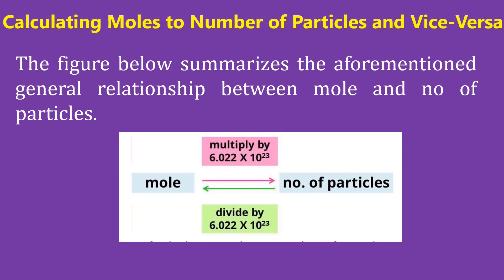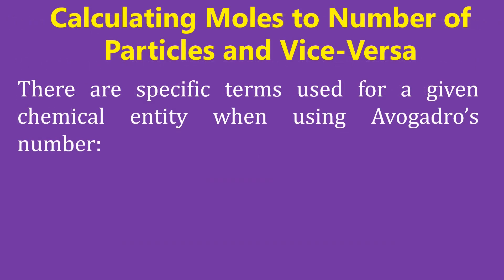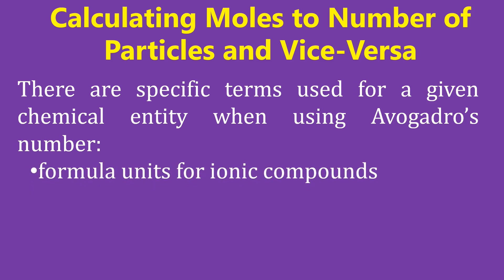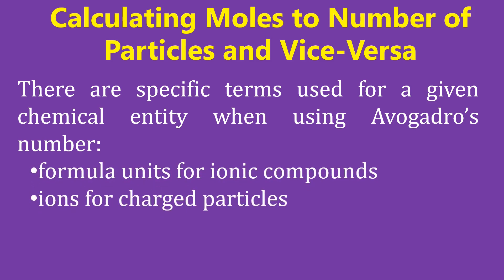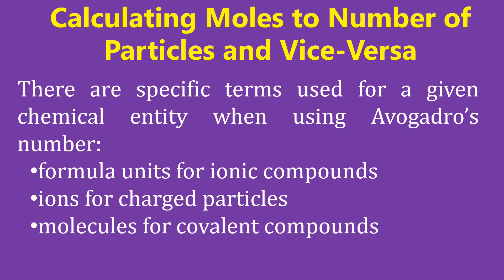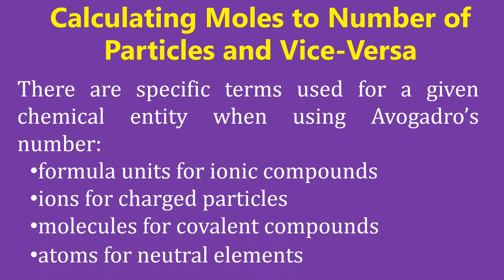The figure below summarizes the general relationship between mole and number of particles. There are specific terms used for a given chemical entity when using Avogadro's number: formula units for ionic compounds, ions for charged particles, molecules for covalent compounds, and atoms for neutral elements.